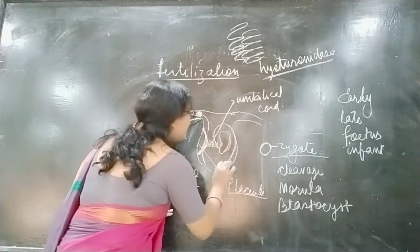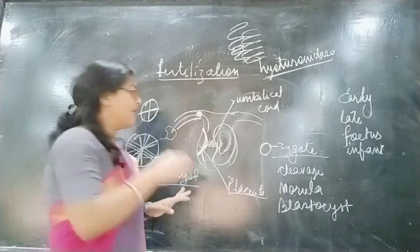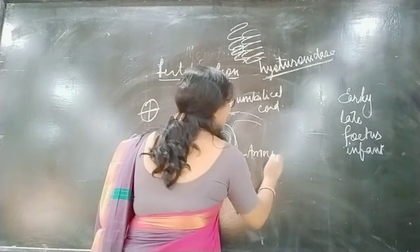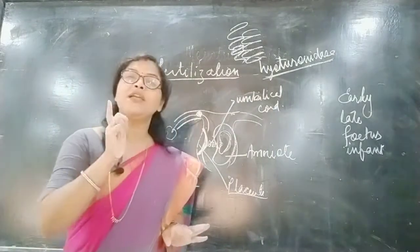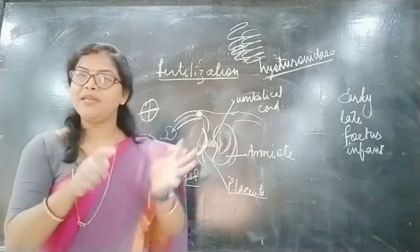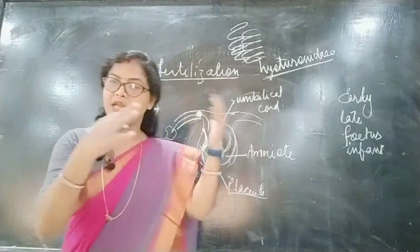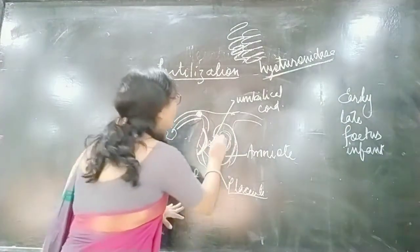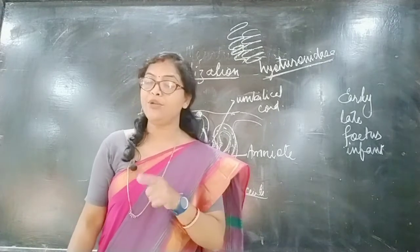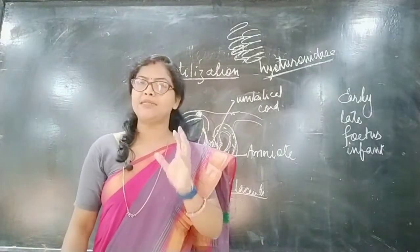At the same time, a sac-like structure develops around the embryo called the amnion. The function of the amnion is to provide mechanical support and prevent the embryo from mechanical injuries. Between the amnion and the embryo there is a fluid called amniotic fluid, which acts as a shock absorber.